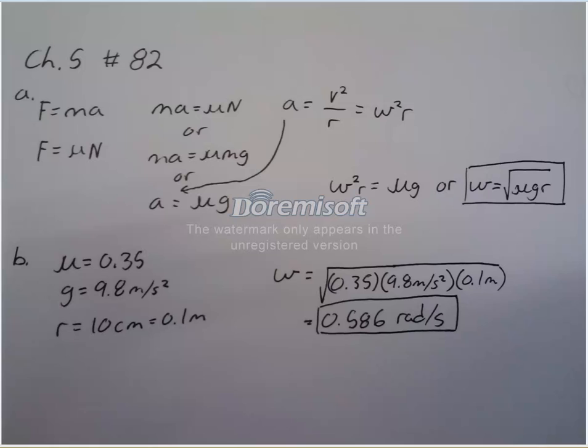So, first part: for the penny to move, the radial force on the penny should be equal to the static friction force. So knowing this, if they're equal to each other, it would just be ma equals μn. Or, since it's at rest, it would just be μmg, because n would just equal mg because it's not moving up or down. We can cancel out the m's and get a equals μg.